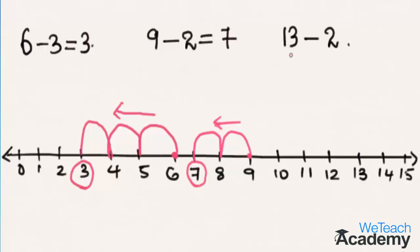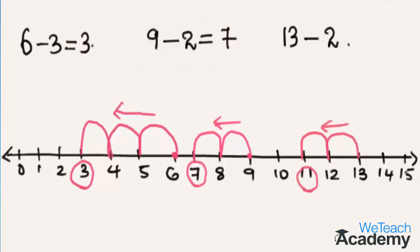The next example is 13 minus 2. We start from the number 13 and move 2 steps towards the left on the number line, and we reach the number 11. So 13 minus 2 is equal to 11.